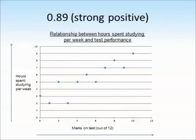So let's have a look at some scatter graphs which show correlations. Notice that on my graph, I have a title: relationship between hours spent studying per week and test performance. Really important, even if you're asked just to sketch a graph, that you include a title. It's also important that you label your axes. So here, you've got the number of hours spent studying per week and the marks on a test out of twelve. Otherwise, it's just meaningless data.